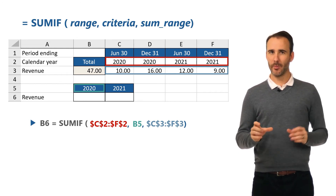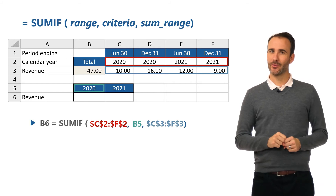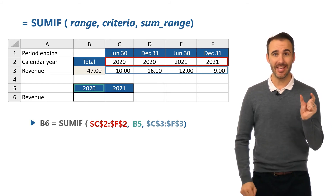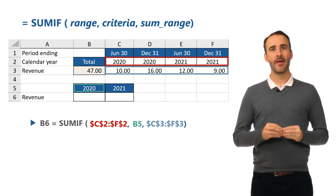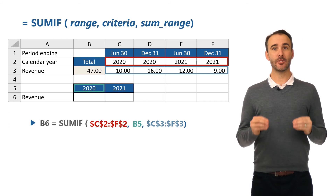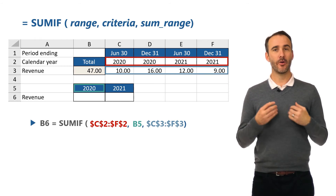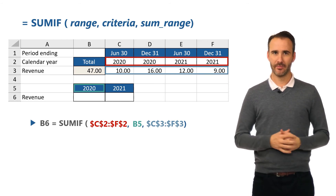That full formula will sum all of the revenue in row 3 if the year is 2020, based on the criteria in B5.